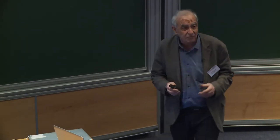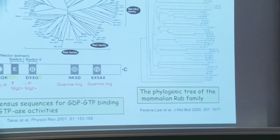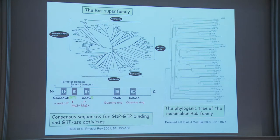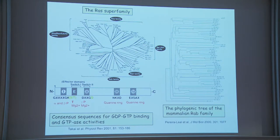I will briefly introduce this family of proteins again. RAB GTPases belong to what is called the RAS superfamily, which contains many proteins: RAS, RHO, RAC, CDC42, Sarwan, and the RAP family. All these proteins, also called small GTPases, have exactly the same structure with a molecular weight of between 20 and 25 kDa, and all carry conserved domains involved in GDP/GTP binding and GTP hydrolysis. The RAB GTPases constitute the largest family of this RAS superfamily, with about 70 members identified in humans, and we don't know the exact function of most of them.